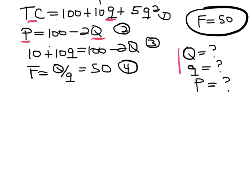Let's begin by replacing equation four into equation three. The easiest way to do that is to solve the F equation for q, so q is going to be equal to 1/50 times big Q. Now we can take this q and put it into the marginal cost equation.